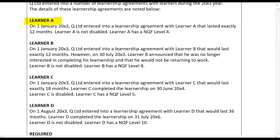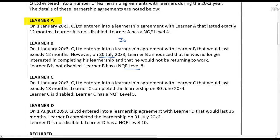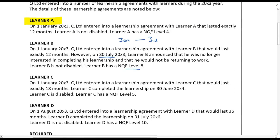Learner B: On the 1st of January 20X3, Q Limited entered into a learnership agreement with Learner B that would last exactly 12 months. However, on the 30th of July — seven months into the year — Learner B announced he was no longer interested in completing his learnership. He has NQF level 8 and is not disabled. NQF level 8 means R20,000. We get the annual allowance for 7 out of 12 months: R20,000 × 7/12. He did not complete, so no completion allowance.